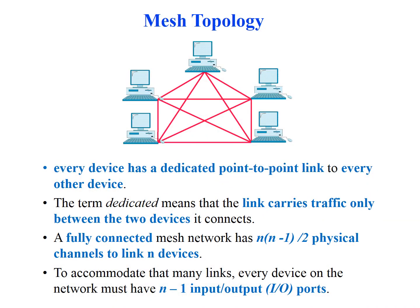In a mesh, every single device will have a dedicated point-to-point connection to every other device in the network. Look at this diagram — it has five devices. If you consider any particular device, it will have an individual direct connection with the rest of the four devices. This is what is meant by dedicated point-to-point here.